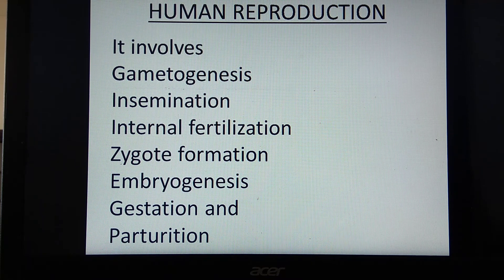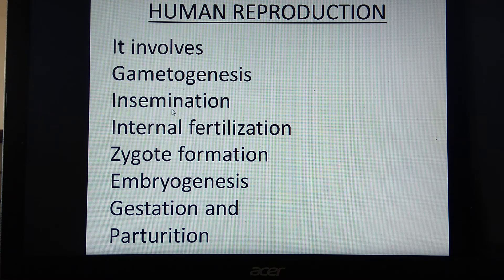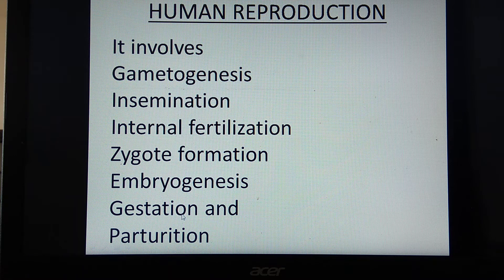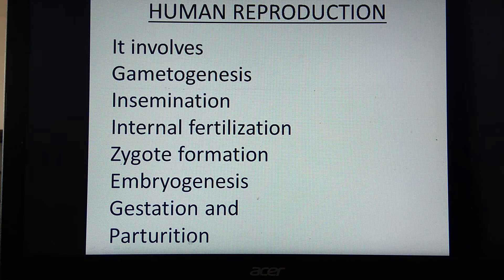Now we will start with human reproduction, the main part of this topic. Human reproduction involves gametogenesis (gamete formation), insemination (transfer of gamete into the female body), internal fertilization (fusion of gametes inside the female body) forming a zygote, embryogenesis, gestation (the period required for development of the complete embryo), and finally parturition — the birth of the child.